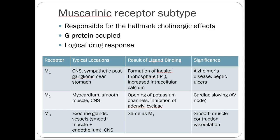The muscarinic subtype receptors are much more interesting as far as pharmacology goes, and we're going to see a lot more uses for muscarinic subtype receptor activity. These are really the hallmark cholinergic effects — they're G-protein coupled, and a pretty logical drug response when you break it down. There are three different subtypes: M1, M2, and M3.